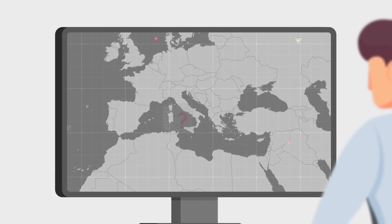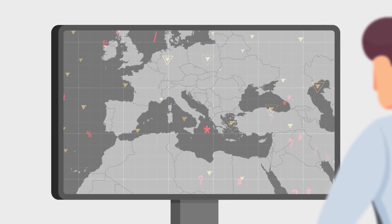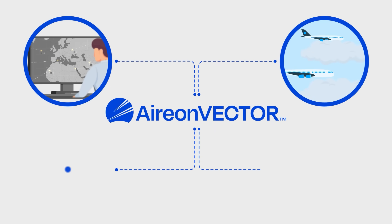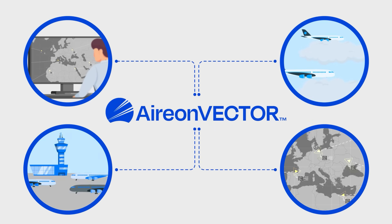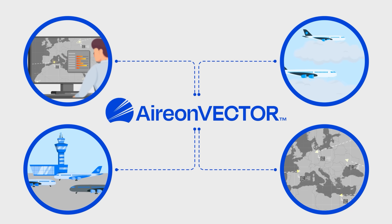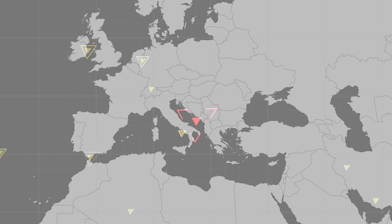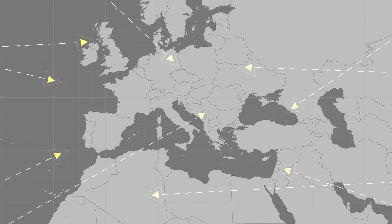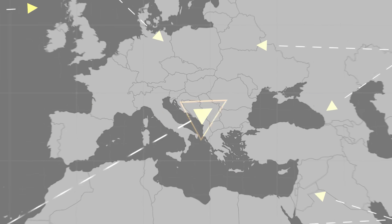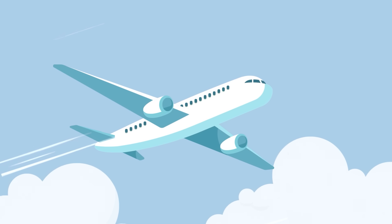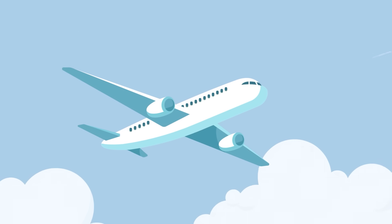When GPS shows no location data — or worse, the wrong data — Aerion Vector detects the issue, informing navigation services, airlines, and airports of the plane's actual coordinates. From jamming to spoofing, Aerion Vector provides resilience to GPS interference, making the skies safer for everyone.